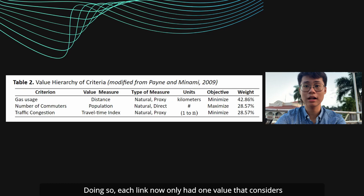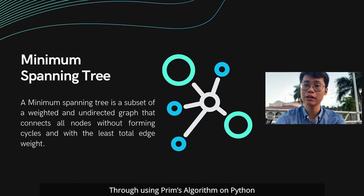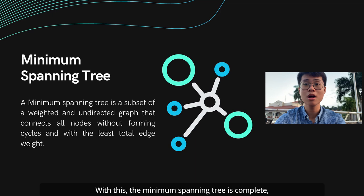At this point, a network or spanning tree was formed. Through using Prim's algorithm on Python, a high-level programming software, only the optimal links were left to be part of the routing paradigm. With this, the minimum spanning tree is complete and shown in Figure 1.